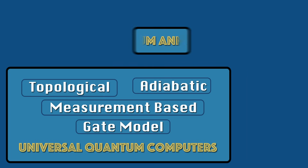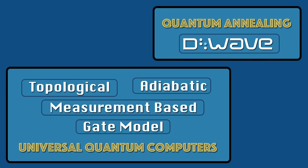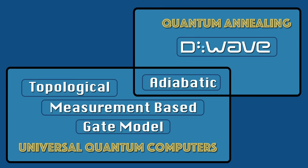Quantum annealing isn't a universal quantum computer, however it is related to one of the forms of universal quantum computers — a form called adiabatic quantum computing. In fact, adiabatic quantum computing is a specific form of quantum annealing which also works on the process of energy minimization, so quantum annealing and universal quantum computers aren't completely separate entities — there is a link between them. In my next video I'm going to explain how quantum annealing works.